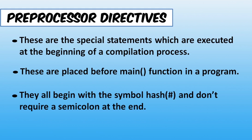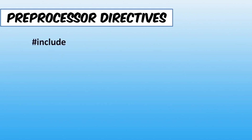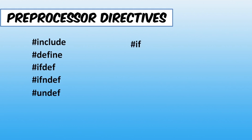I have listed some preprocessor directives which we often use in C programming language: #include, #define, #ifdef, #ifndef, #undef, #if, #else, #elif, and #endif. These are the preprocessor directives we use in C programming language.